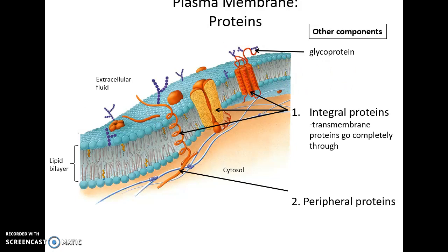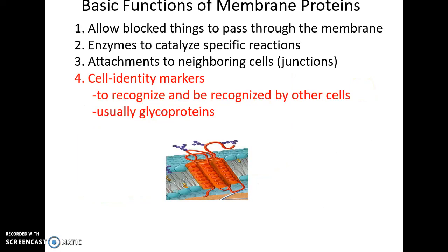You also find glycoproteins, which have carbohydrates attached to them facing out to the extracellular fluid. These proteins can be integral proteins, meaning they are embedded in the plasma membrane. If they go all the way through, they are also called transmembrane proteins. The other set are peripheral proteins, which just bind to the surface of the plasma membrane.